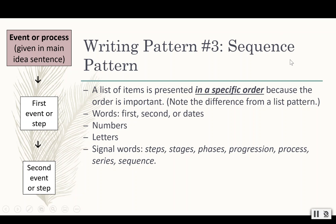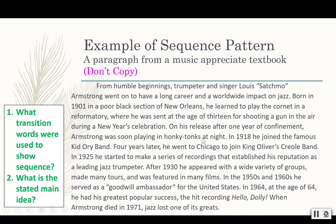For example, you have to make the batter for the brownies before you can put anything in the oven. Similarly to the list pattern, authors for a sequence pattern might use words like first, second, third, or they might use dates, numbers, or letters. Their signal words might include: steps, stages, phases, progression, process, series, or sequence. The event or process is going to be part of that main idea, and then your steps or events are going to follow. Let's take a look at an example.